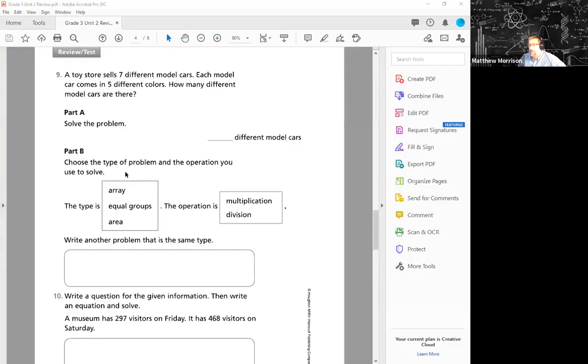So we read here at the top: a toy store sells seven different model cars, and each model comes in five different colors. So how many different model cars are there? There's a number of ways that we can approach this. We have two important pieces of information: seven different models and five different colors.